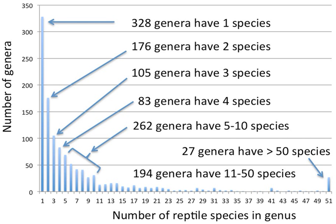The scientific name of a genus is also called the generic name; it is always capitalized. It plays a pivotal role in binomial nomenclature, the system of naming organisms.